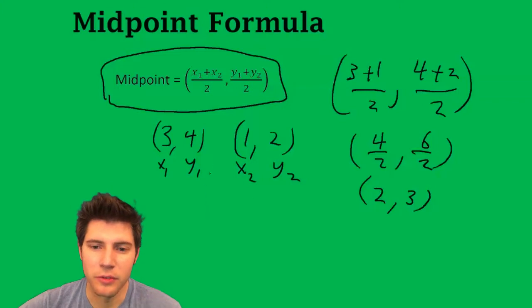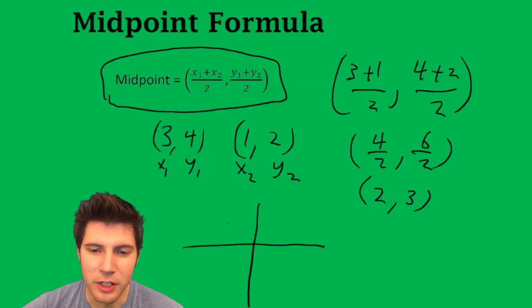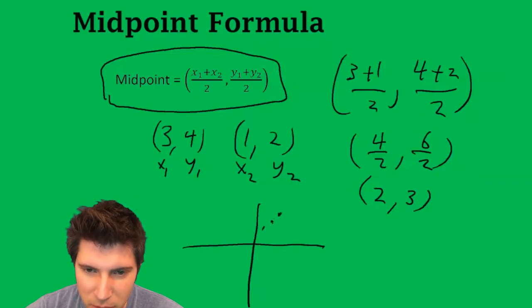And ultimately what you found was, if you have a point here, 3, 4, and a point here, 1, 2, you found the point that was in the middle of them.